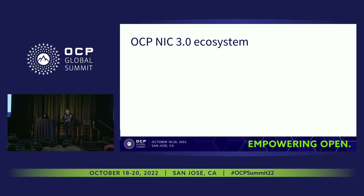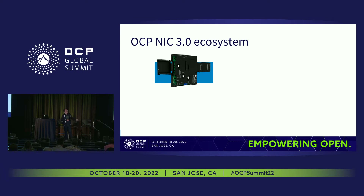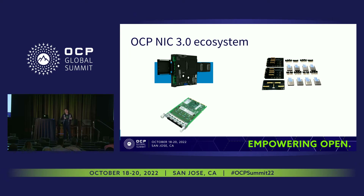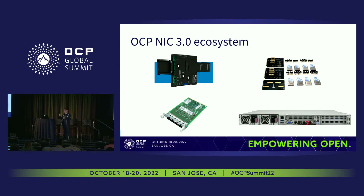Taking a step back to look at the OCP NextUp ecosystem: the picture shown here is one of the protocol analyzers we use when debugging failures. Another picture shows something we use for signal integrity measurement, such as insertion loss measurement. And of course, the ecosystem consists of NICs.